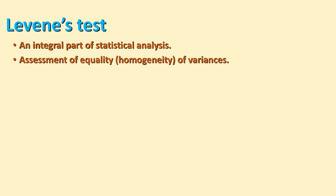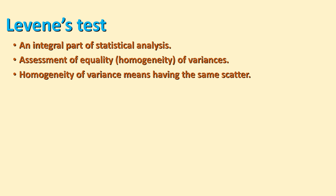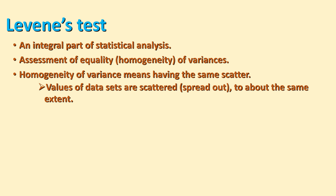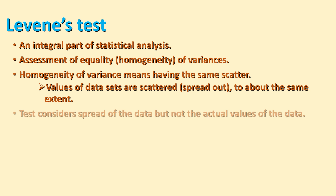Levene's test assesses the equality or homogeneity of variances. Homogeneity of variance means that the variance has the same scatter from one group to another — values of data sets are scattered and spread out to about the same extent. The test looks at the spread of the data, but not the actual value of the data.